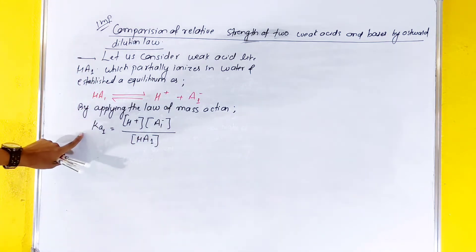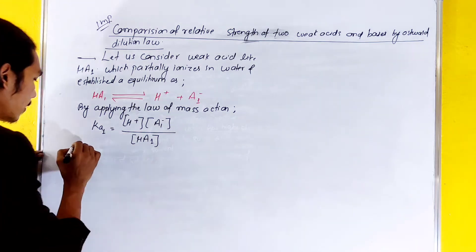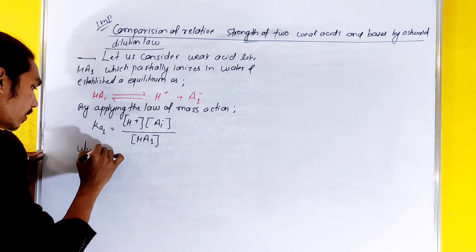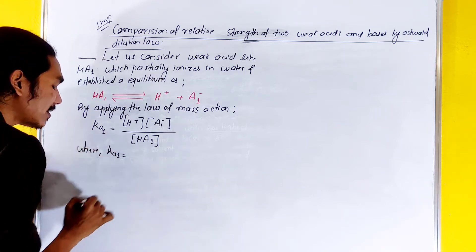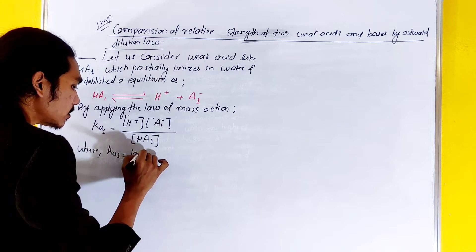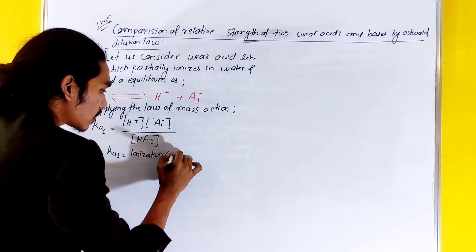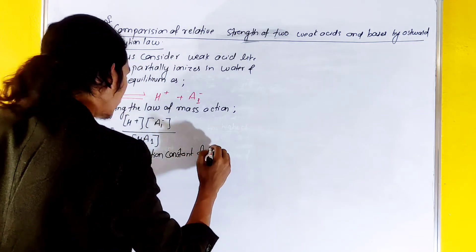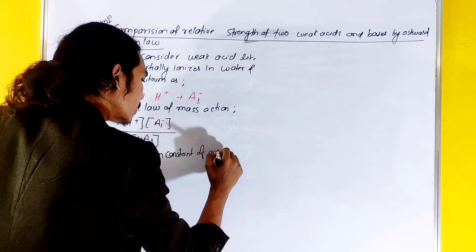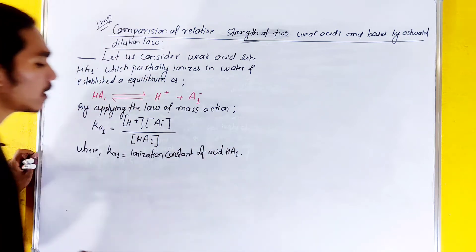We'll assume Ka1 is the ionization constant of HA1. This is the ionization constant of HA1.